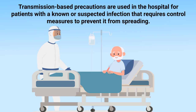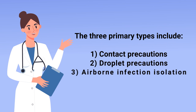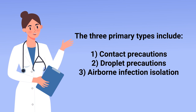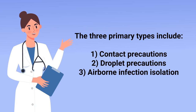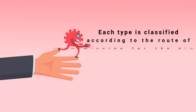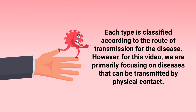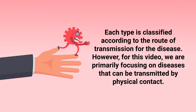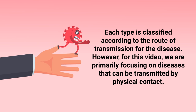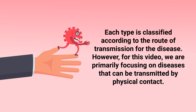Transmission-based precautions are used in the hospital for patients with a known or suspected infection that requires control measures to prevent it from spreading. The three primary types include contact precautions, droplet precautions, and airborne infection isolation. Each type is classified according to the route of transmission for the disease.